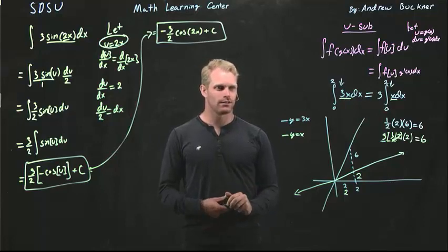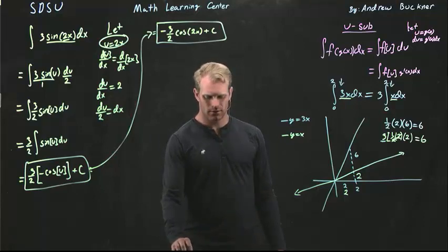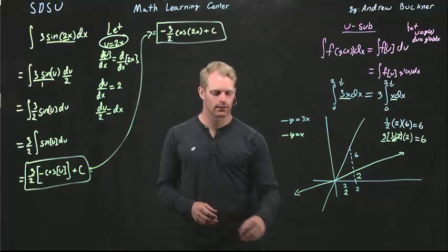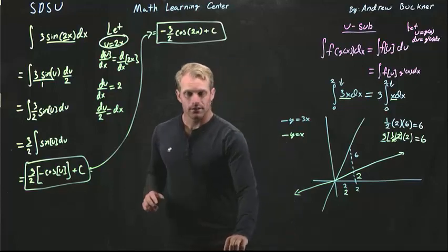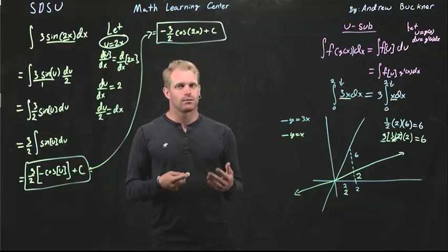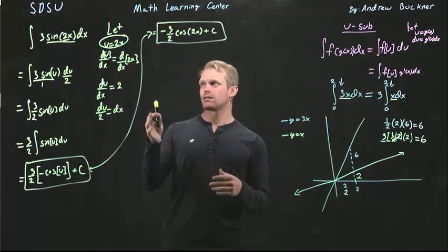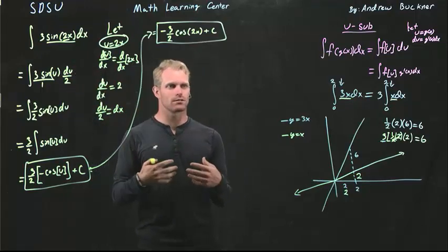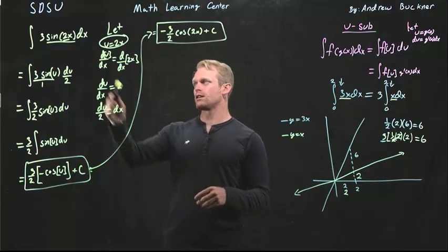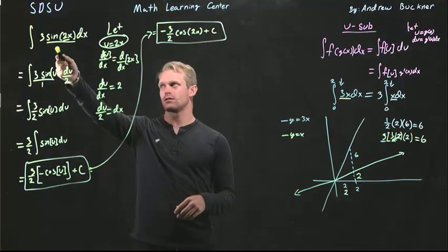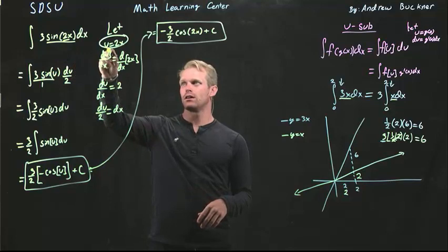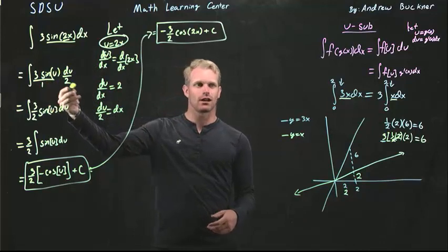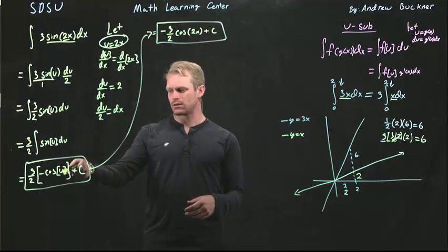Yes, Bob, go ahead. So for u-sub, is that the only method I have when dealing with composition of functions, or is there another way to do it? That's a great question. The reason why we do a u-substitution is because it's going to make this complex problem, or this composition of two functions, a little more familiar to me, where instead of having a composition of two functions which is what I started with, by doing a change of variables or u-substitution, I then turn it into a single function that I can integrate over.